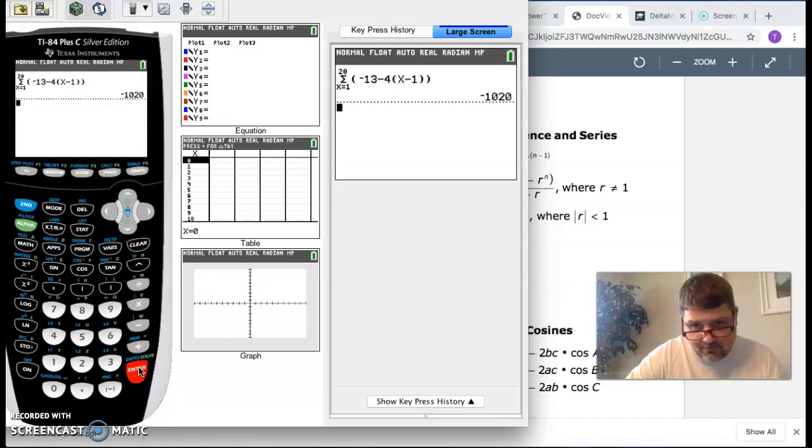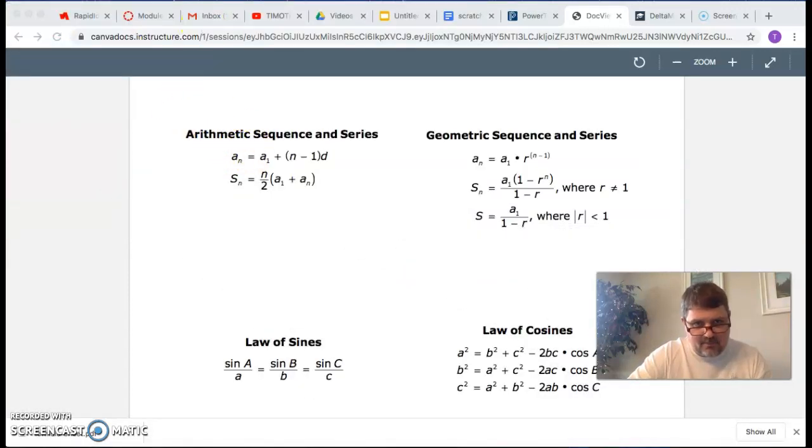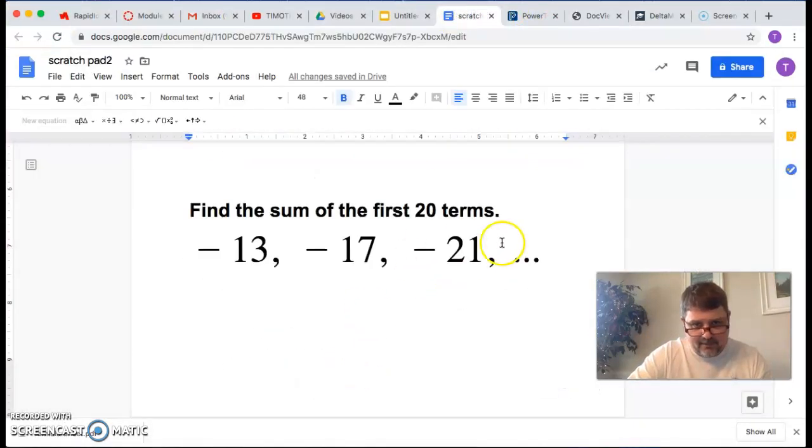That right there should give me the sum of the first 20 terms. And we find that the sum of the first 20 terms is negative 1,020. Not too bad. What's nice about that, we didn't have to find the nth term formula to do it. Imagine that being a step that would sort of be embedded in here.